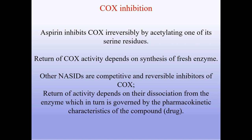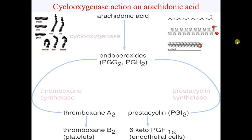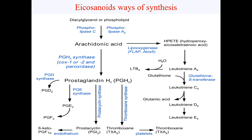Arachidonic acid, with the help of cyclooxygenase, produces endoperoxides PGG-2 and PGH-2. These proceed in two ways: with thromboxane synthetase to produce thromboxane A2, and with prostacyclin synthetase to form prostacyclin PGI-2, which are then converted to thromboxane B2 and 6-keto-PGF-1-alpha respectively.